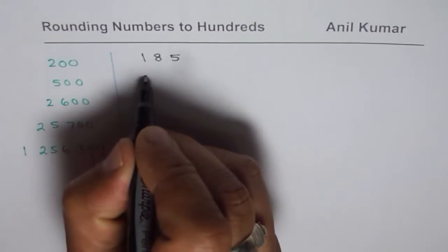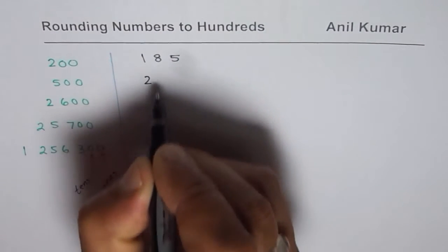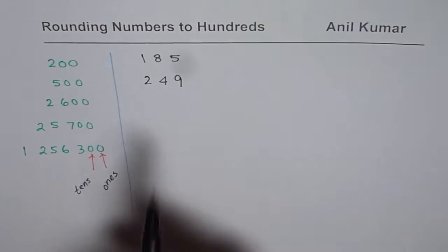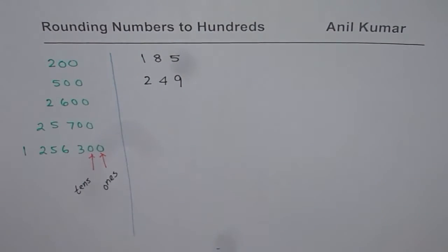Also we could take a number which is like 249. This number also rounds to 200. Let us see how and why.